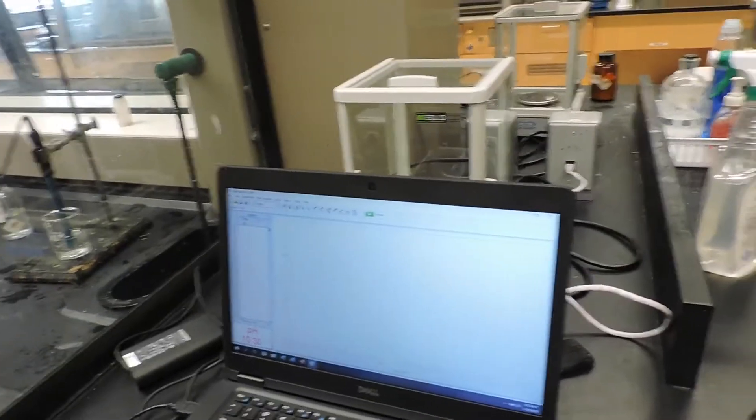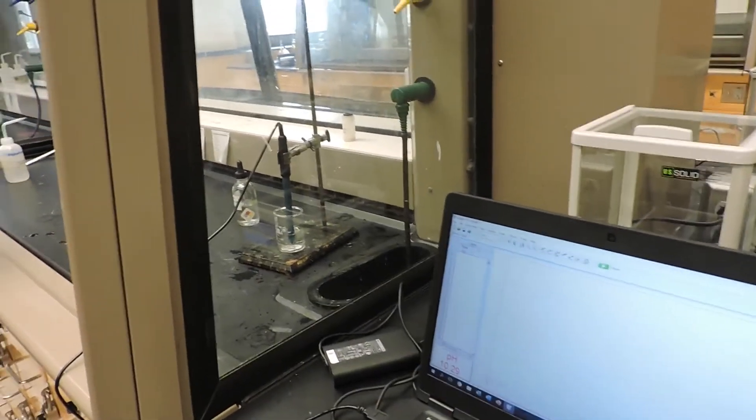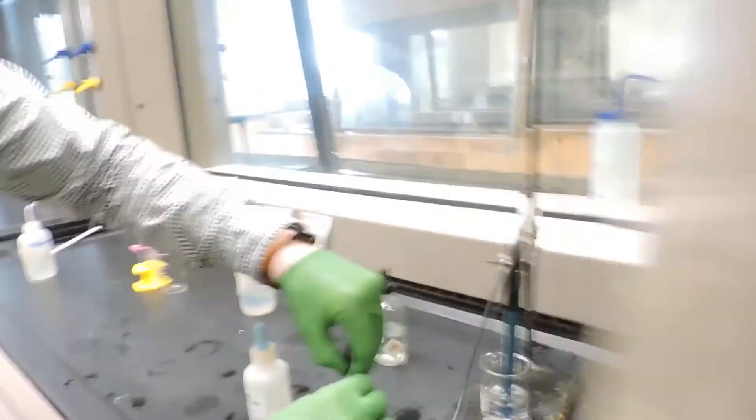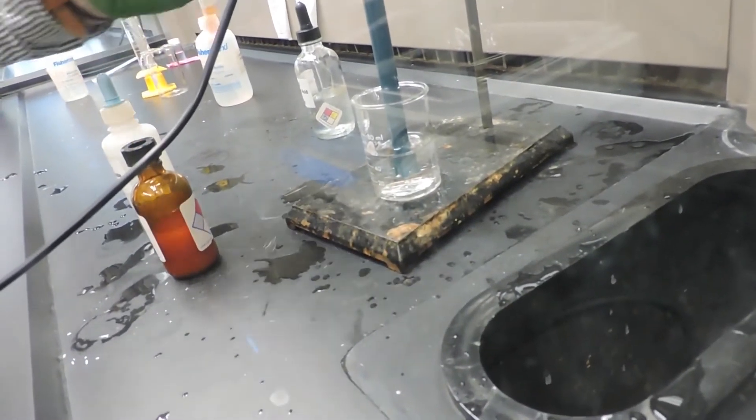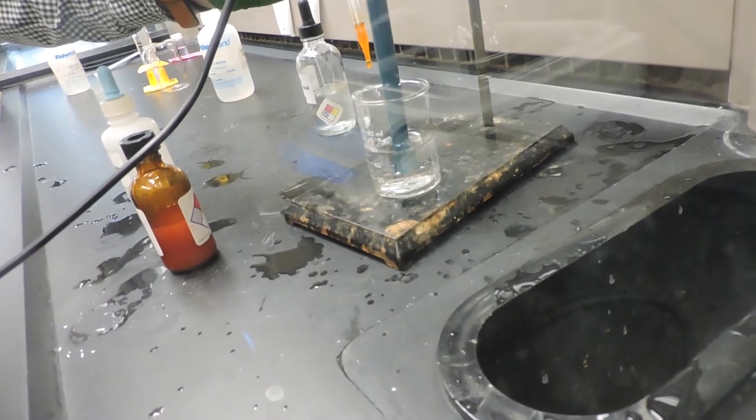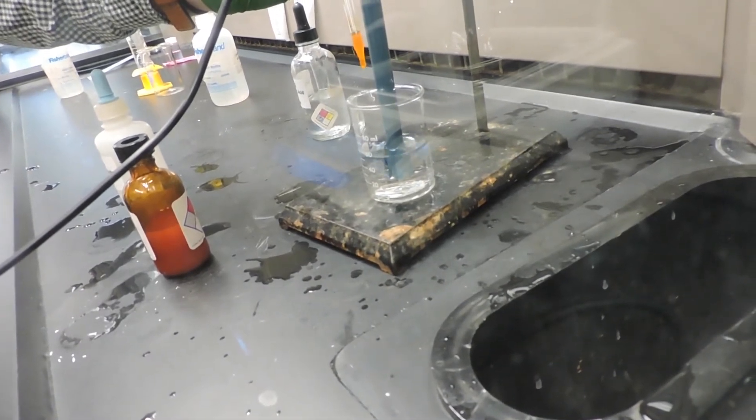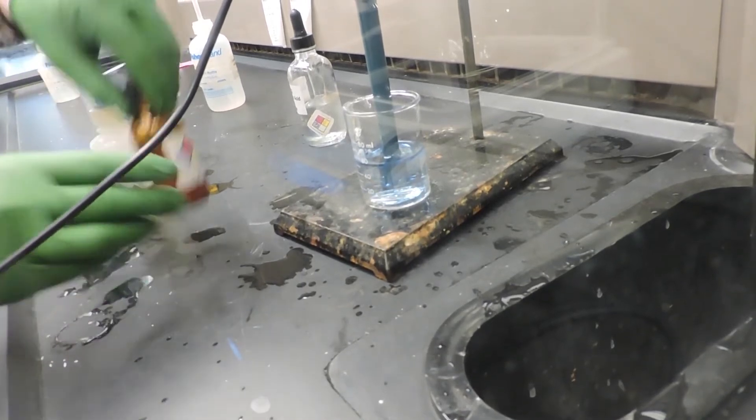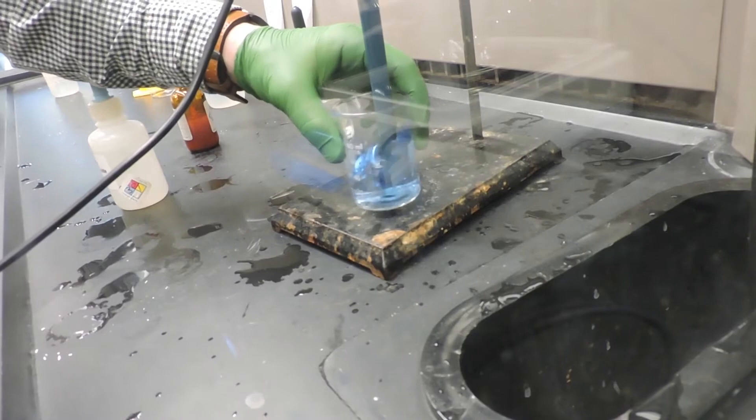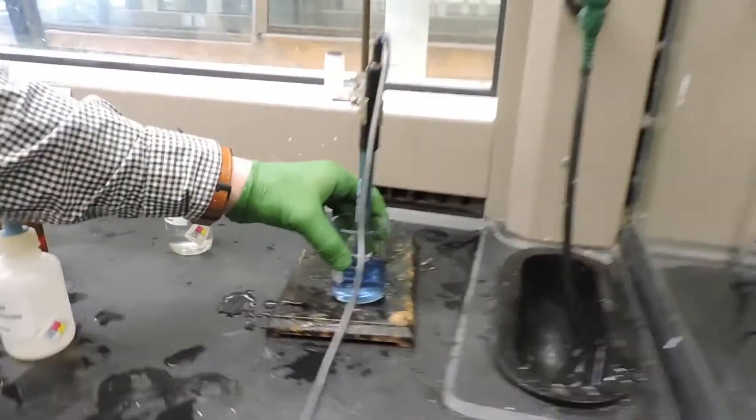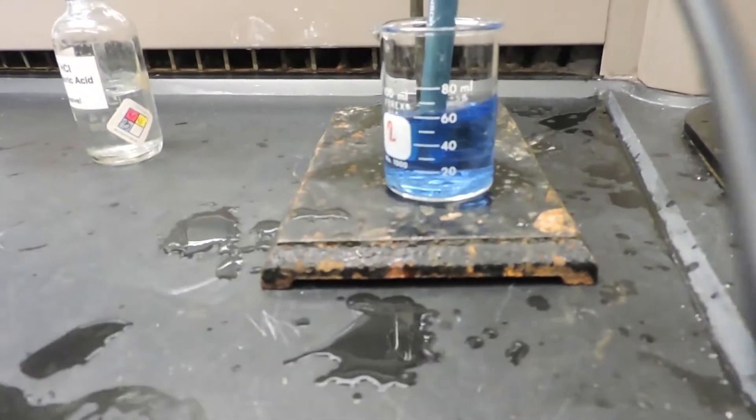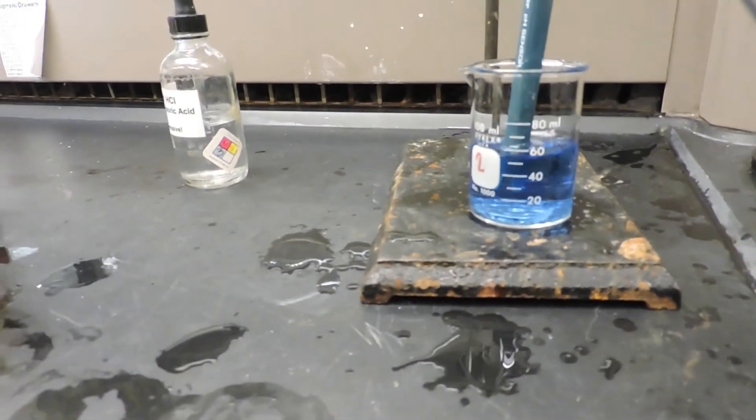Next, we're going to add three drops of a Bromo Blue indicator to our solution and note what color it changes. This is a really nice blue color now.